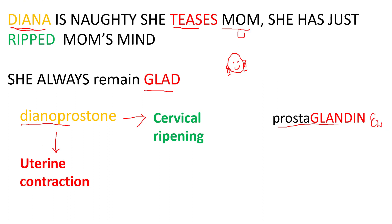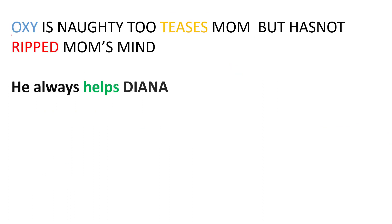Diana is a girl and she wears two earrings, so it is prostaglandin E2. How easy it is! To summarize: Diana is Dinoprostone. Teasing means contractions; mom is the uterus. She has deprived — it also causes cervical ripening. She always remains glad — it is a prostaglandin. Diana is a girl with two earrings, so it is prostaglandin E2.